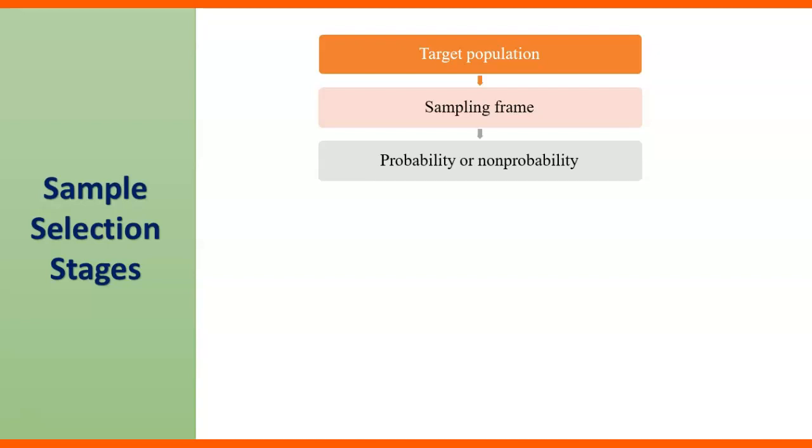In probability sampling, everybody will get equal chances of selection, and in non-probability the case is the other way around.